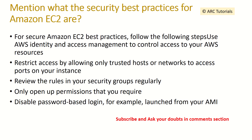Explain what the security best practices for Amazon EC2 are. First, use AWS Identity and Access Management (IAM) to control access to your AWS resources. Then restrict access by allowing only trusted hosts or networks to access ports on your instance. Regularly review the rules in your security groups. Only open up permissions that you require, and disable password-based login — instead use authentication keys through IAM or AMIs.